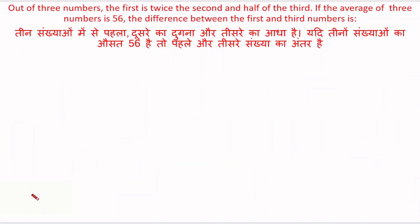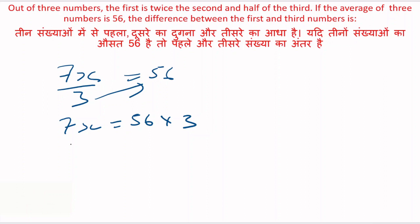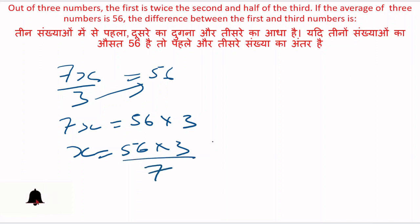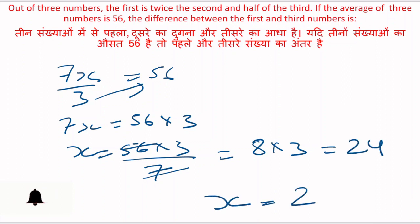Inko solve karte hain. 2x plus x plus 4x kya hoga? 7x. So 7x divided by 3 is equal to 56. Three upar jayega: 7x is equal to 56 into 3, divided by 7. X ka value kya hai? X = 56 into 3 divided by 7 = 24.